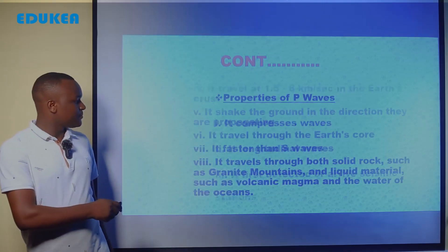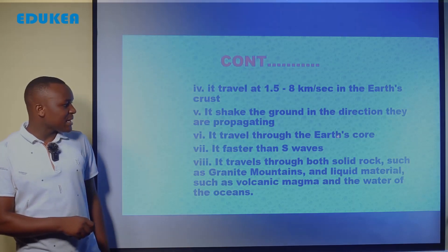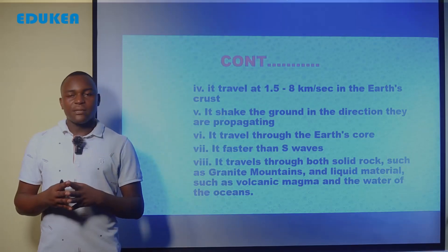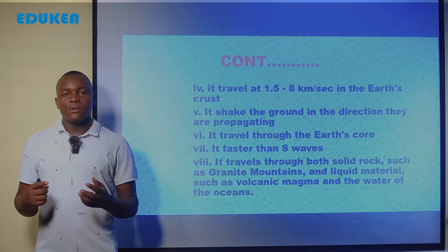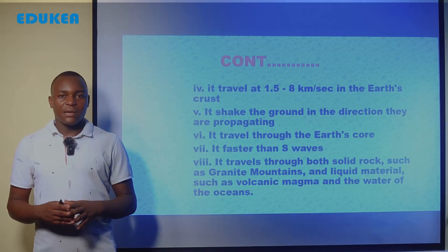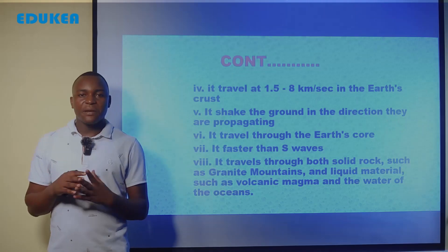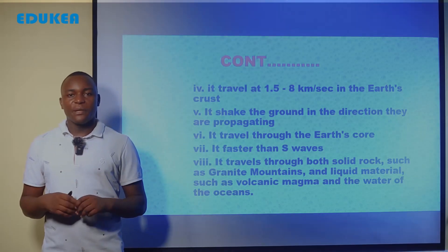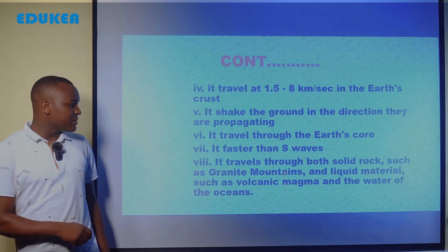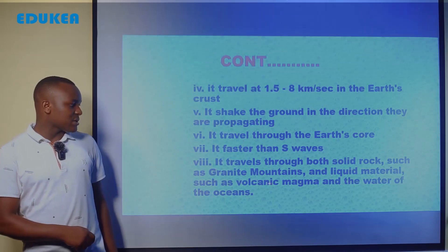Primary waves also travel through the Earth's core. The Earth's structure includes the core, mantle, and crust, and primary waves travel along the Earth's core. They are faster than secondary waves. Also, they travel through both solid rocks such as granite and liquid material such as volcanic magma and water of the oceans.